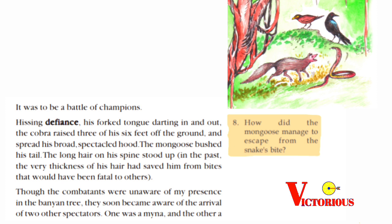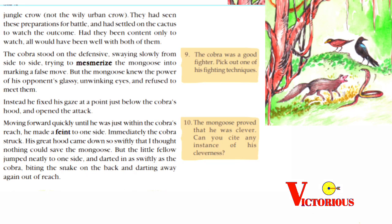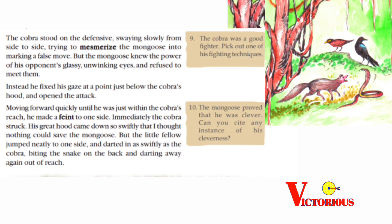The spectators: one was a mina and the other a jungle crow — not the urban crow. They had seen the preparations for battle and had settled on the cactus to watch the outcome. Had they been content only to watch, all would have been well with both of them.